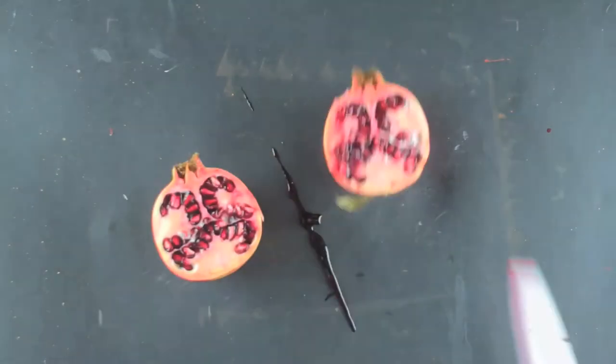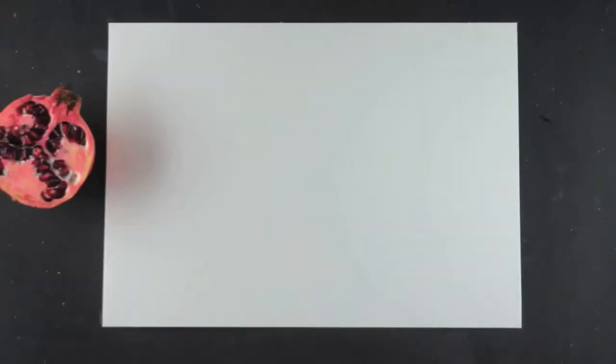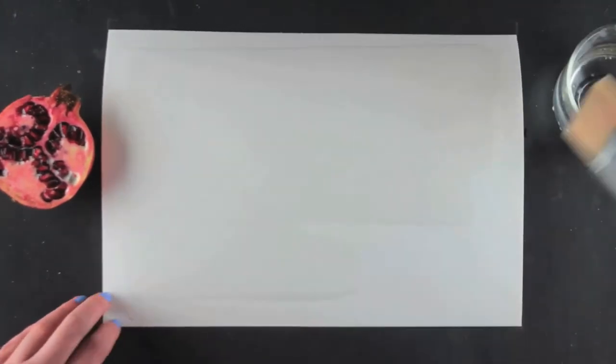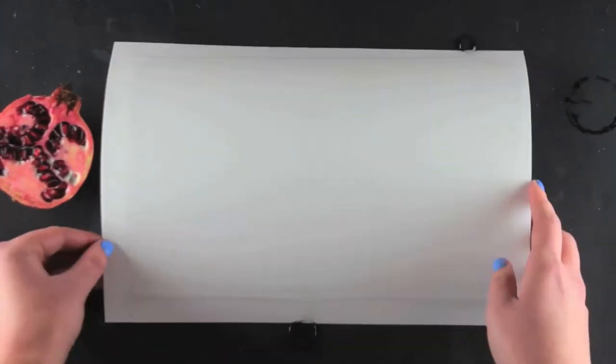I cut a pomegranate in half to see the flesh of the fruit inside. I apply a wash, wet a large rectangle leaving a 1cm border dry. The water makes the paper curl so I tape down the corners.